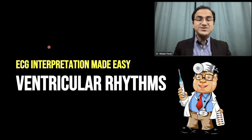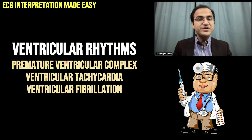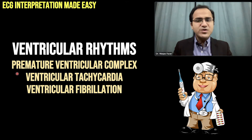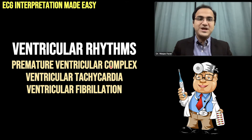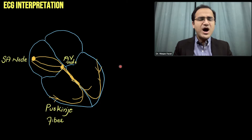In our ECG interpretation made easy video series, in this video we are going to start ventricular rhythms. Ventricular rhythms include premature ventricular complexes, ventricular tachycardia, and ventricular fibrillation. In this video we are going to mainly focus on premature ventricular complexes. In subsequent videos we will be talking about ventricular tachycardia and ventricular fibrillation.